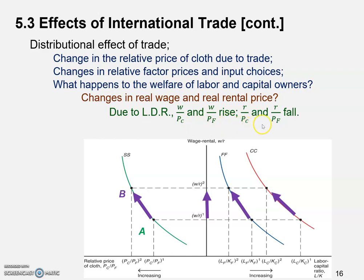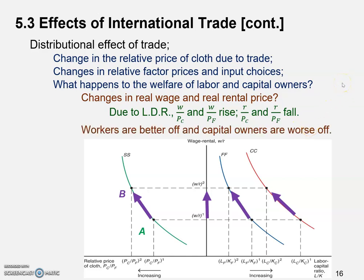Similarly, the rental price would go down. In both the food and cloth industries, firms use more capital. Because of the diminishing returns to capital, the last unit of capital added would be less productive, so the real rental price would decrease. Using layman's terms, we could say workers are better off and capital owners are worse off.